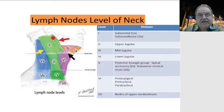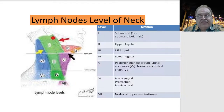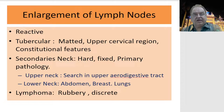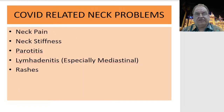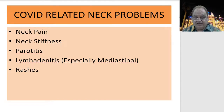There are seven categories of lymph nodes in the neck. Depending upon the primary, you have to search for metastasis in the various lymph node groups. Lymph nodes can be reactive, tuberculous, secondary deposits, or lymphoma. Reactive hyperplasia is seen many times — even with a cold you can get lymph nodes in the neck. Certain co-validated neck problems include neck pain, neck stiffness, parotitis, lymphadenitis, and rashes.